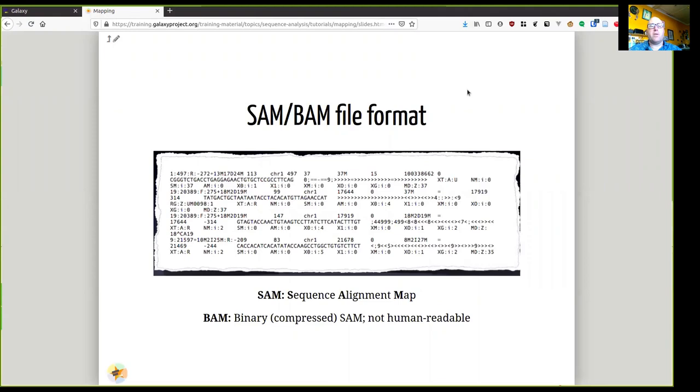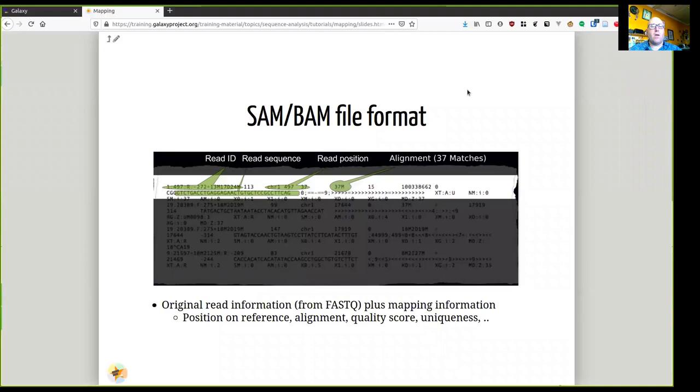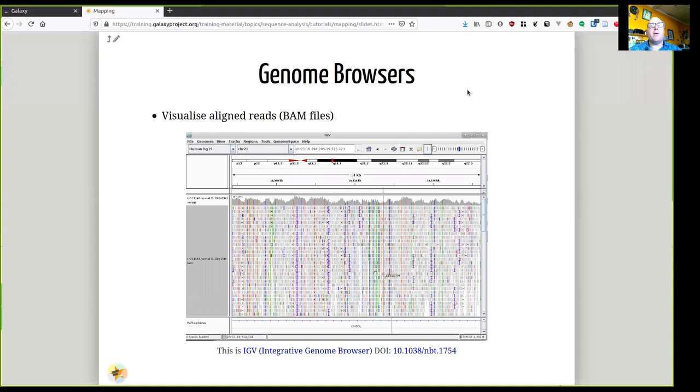Once reads are aligned, you get outputs in a format called BAM. It looks like this or SAM. It's the text version of BAM. And it has read IDs, read sequences, read positions, and so on. But we will discuss that more during the tutorial.